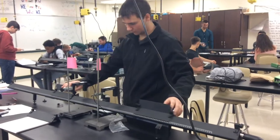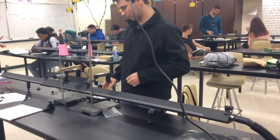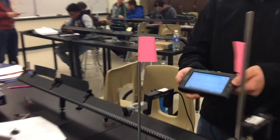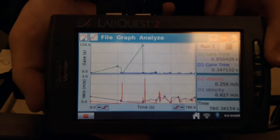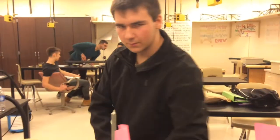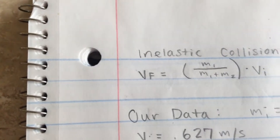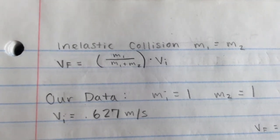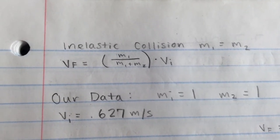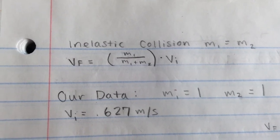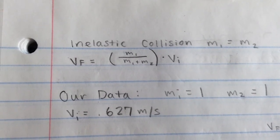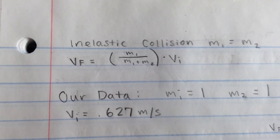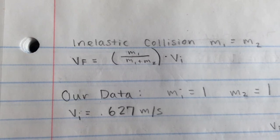In this final trial, we will be testing an inelastic collision when the masses of both objects are equal. Once again, the magnets will be used. Here are our results on the LabQuest and here's the work using those results. In an inelastic collision where the mass of the first object is equal to the mass of the second object, the velocity final should equal the mass of the first object over the mass of both objects combined, multiplied by the velocity initial. In simpler terms, the velocity final should equal one-half of the velocity initial.